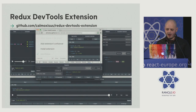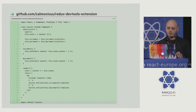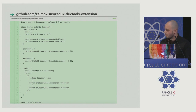Just yesterday I released version 2.0, where it's now possible to use it not only for Redux but for any flux architecture and even non-flux. Here's an example of how we use it for inspecting React local state. If it's too small, you can find it right in this repository in the examples folder.